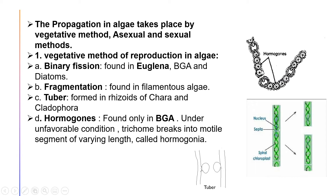Hormogonia develop into larger length by vegetative reproduction. At the heterocyst is the place where the filaments break into hormogonia. They may be formed due to breakage of the filament or due to decay of the filament. This is all about the vegetative method of reproduction in algae.